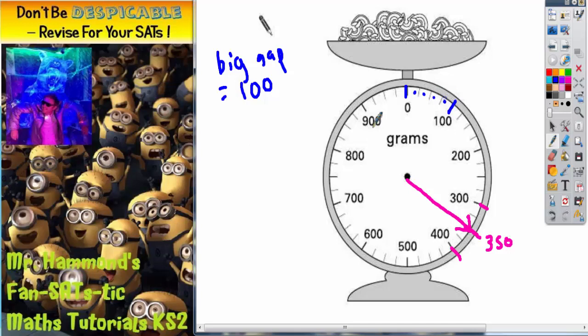So if you share the big gap into four mini gaps, it will tell you what each mini gap is. So 100 divided by 4. To divide by 4, half and half again. So half of 100 is 50, half it again is 25. So each mini gap is 25 grams.